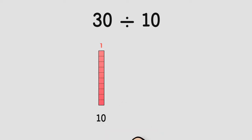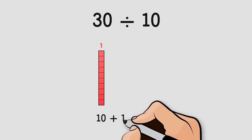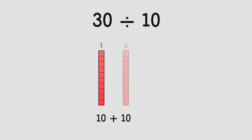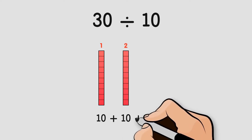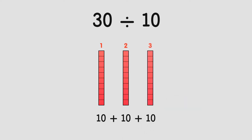One group of 10 is 10, so that's not enough. Plus a second group is 20, plus a third group is 30. So 30 can be thought of as 10 plus 10 plus 10, or three groups of 10. So if we divide 30 by 10, we end up with three groups.